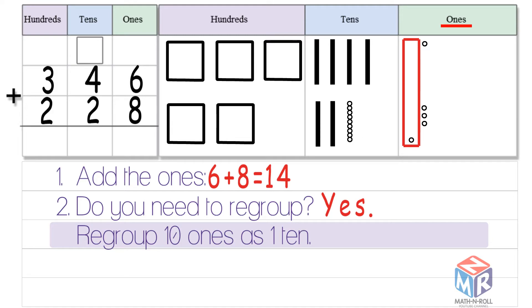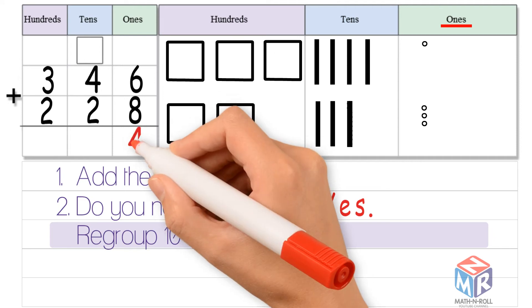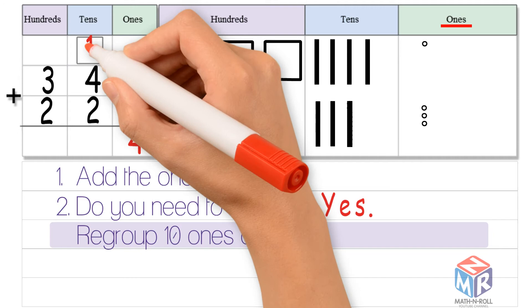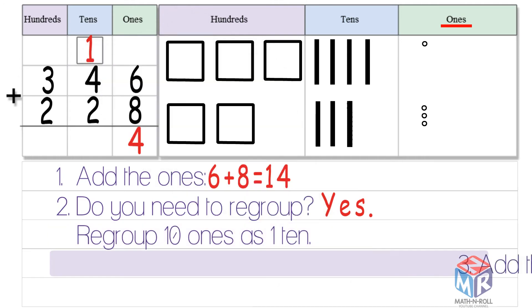You can see the 10 ones transferring to the tens column. Now we have four ones, and one more ten. So we add the tens, 1 plus 4 plus 2 is equal to 7.